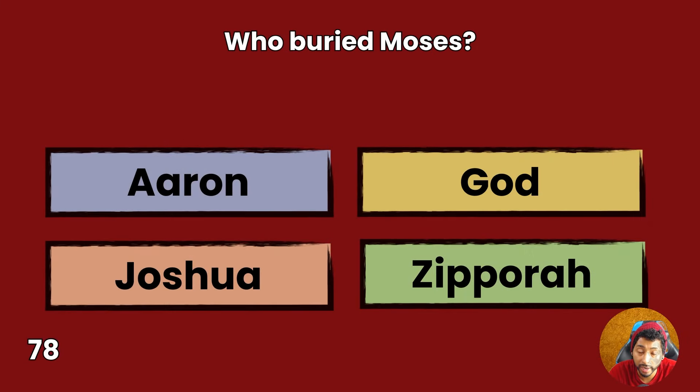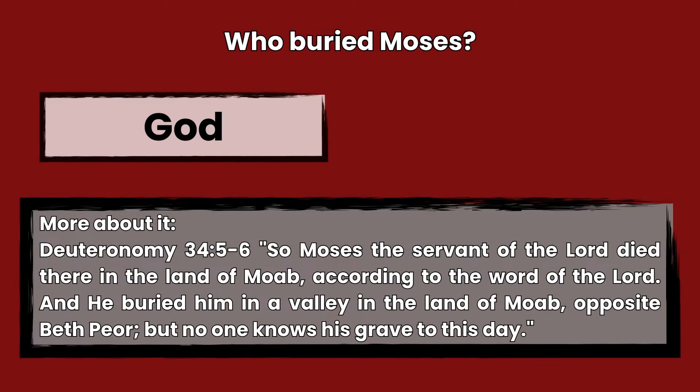Question 78: Who buried Moses? Aaron, God, Joshua, or Zipporah? Answer: God. Deuteronomy 34:5-6 — So Moses the servant of the Lord died there in the land of Moab, according to the word of the Lord, and he buried him in a valley in the land of Moab, opposite Beth Peor, but no one knows his grave to this day.